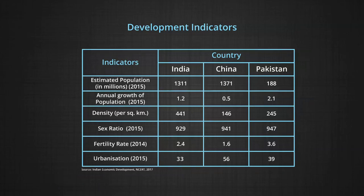Table one shows demographic indicators of India, China and Pakistan. The growth rate of population continues to be highest in Pakistan and fairly high in India compared to China. In China, the adoption of the one child norm for three decades could be a major contributing factor for this change. Fertility rate is very high in Pakistan, followed by India and China.